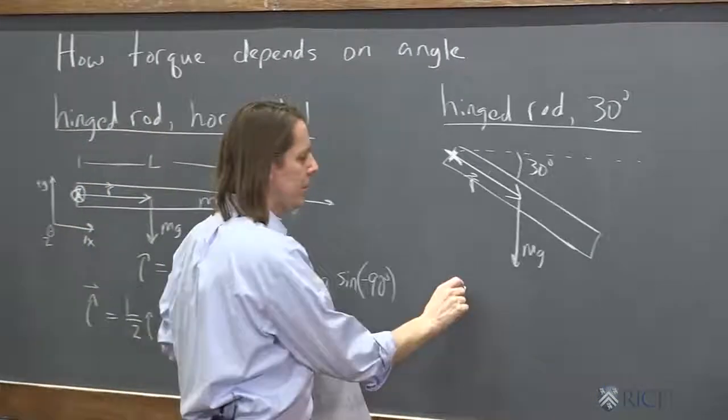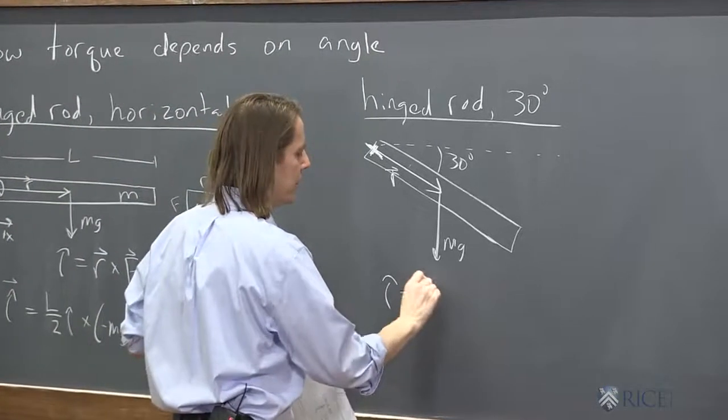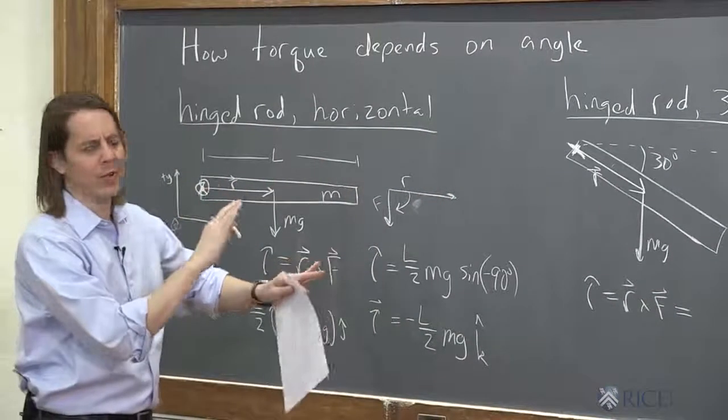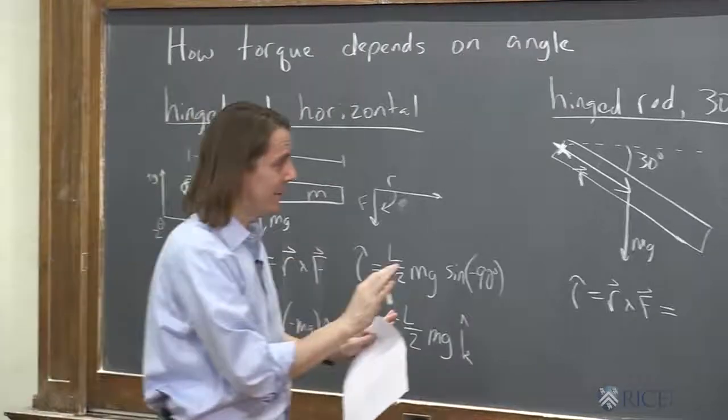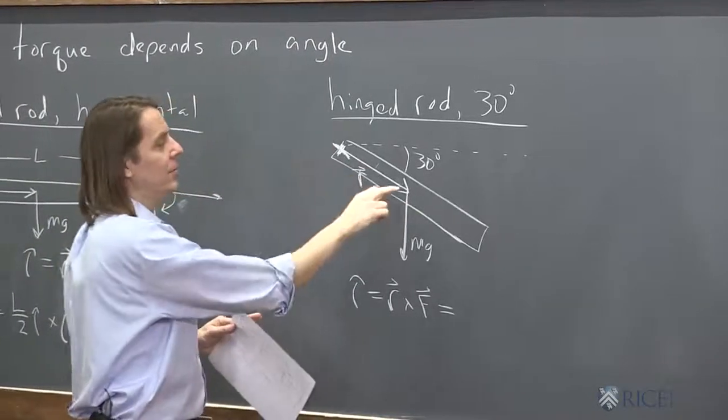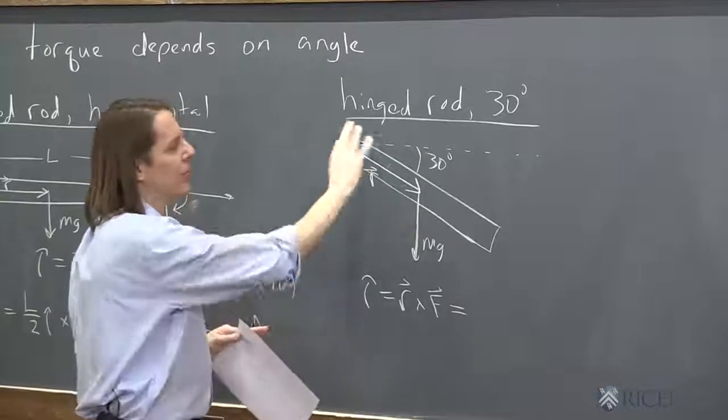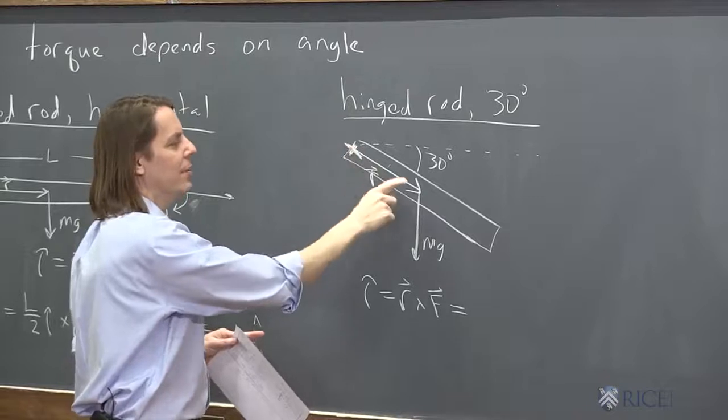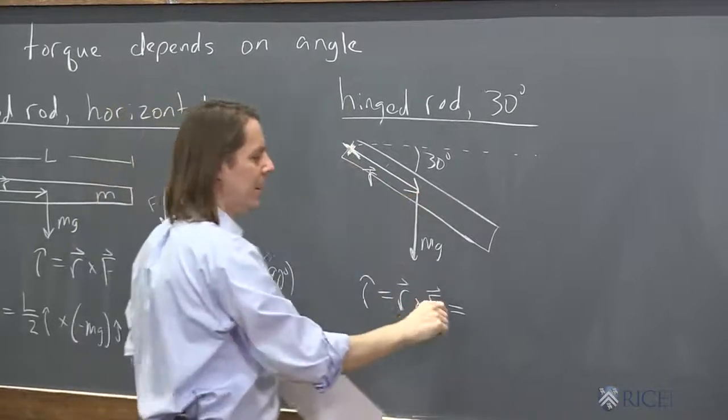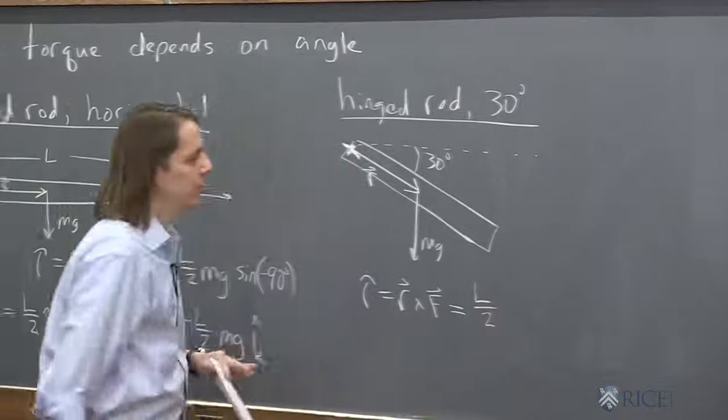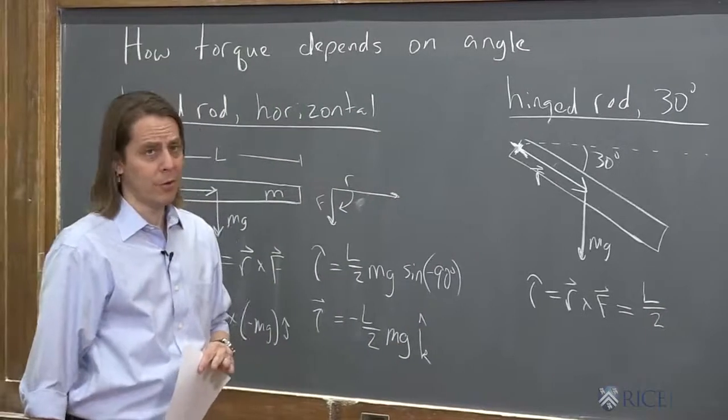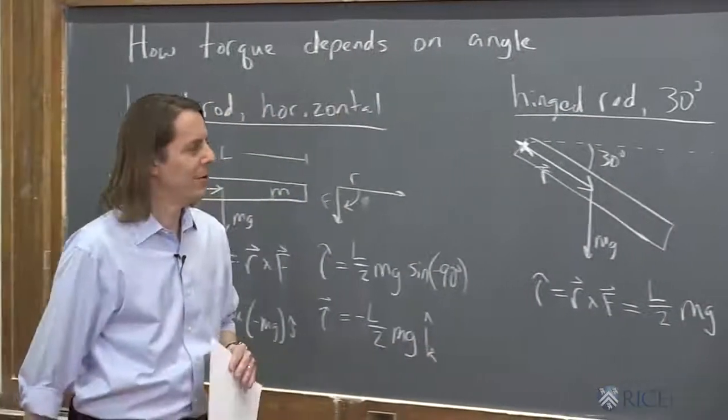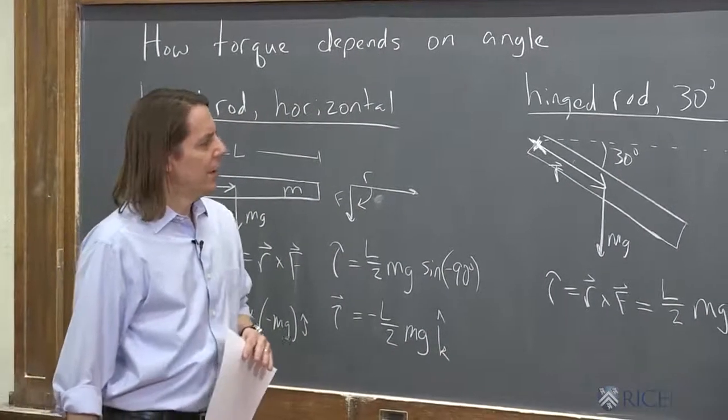So then we say torque is R cross F. And now we don't want to get into breaking this into components for an xy coordinate system. Let's just go with the magnitudes. So the magnitude here, it's still L over 2. There's no angle part to that. It's always from the point of the rotation is at the end of the rod. The force is always applied at the middle of the rod. That's always going to be L over 2. The magnitude of the force is always going to be mg. So in these problems, the only thing to think about is the angle.